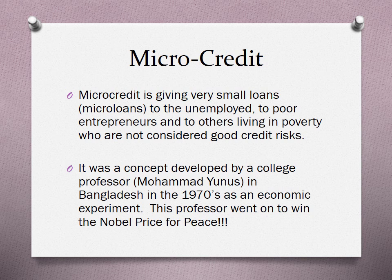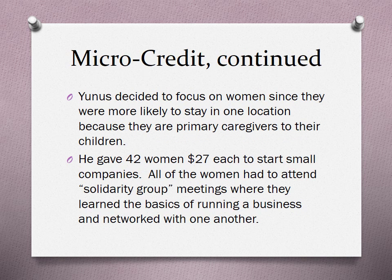He went on to win the Nobel Peace Prize. The experiment was so successful that it improved conditions and resulted in more peaceful experiences for people. Yunus decided to focus on women since they were more likely to stay in one location because they are the primary caregivers to their children.